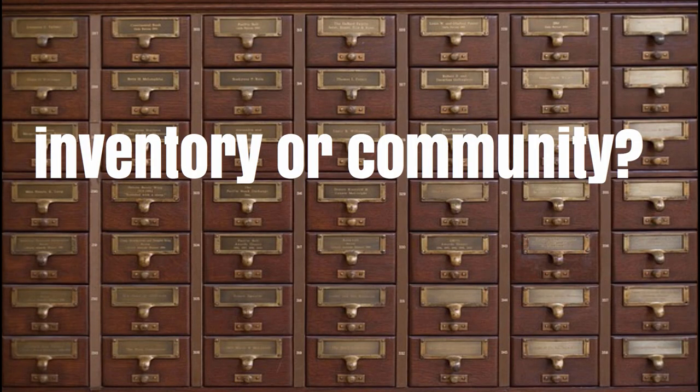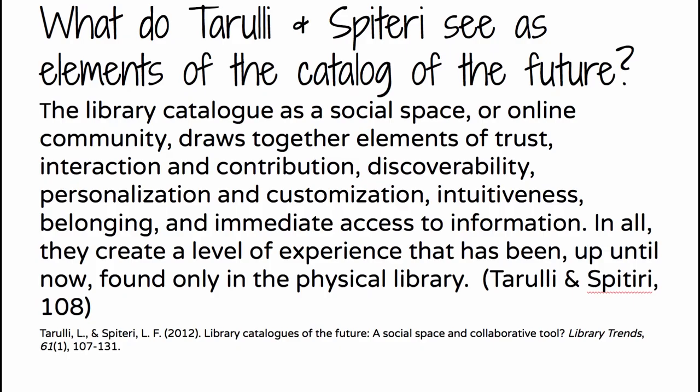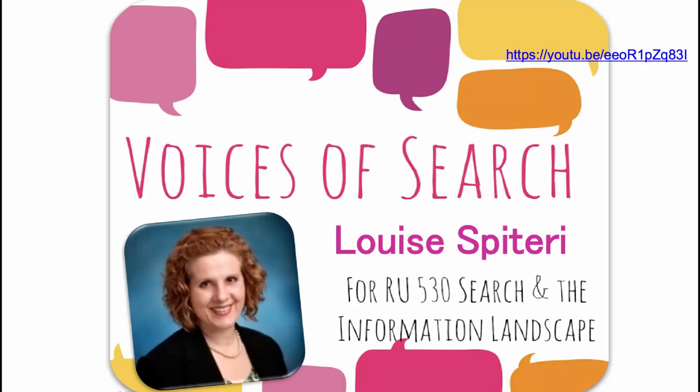We're also talking about what it's like when you crowdsource your library catalog. Do you think of it as an inventory or as a community? Is it a website or a catalog, and are they both hubs? You'll meet Louise Rader this week — she's written a number of articles and a book on the social catalog. She notes that the library catalog as social space or online community draws together elements of trust, interaction, contribution, discoverability, personalization, customization, intuitiveness, belonging, and immediate access to information — creating a level of experience that has until now only been found in a physical library.